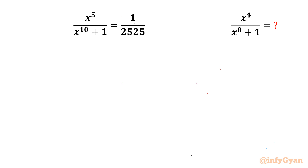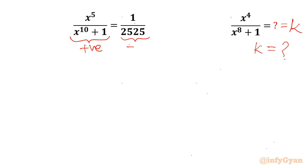Let us get started by considering this expression equal to k, so we have to find the value of k finally. Now, the denominator of the given equation is always positive and the right-hand side constant is positive, so x⁵ should be positive. The conclusion is: for real solutions, x should be greater than 0.